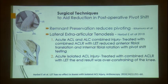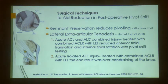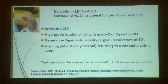Lateral extra-articular tenodesis (LAT) can definitely help. In acute ACL with combined anterolateral corner injury, ACL reconstruction combined with LAT reduces both translation and rotational components. However, in acute isolated ACL injury, adding LAT would over-constrain the knee. Indications for LAT are: revision ACL, high-grade rotational instability with pivot shift grade 2 or 3, generalized laxity, and genu recurvatum greater than 10 degrees.